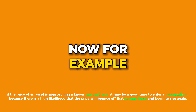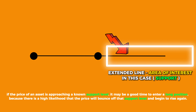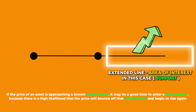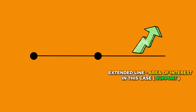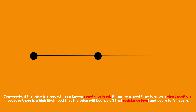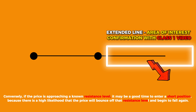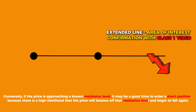For example, if the price of an asset is approaching a known support level, it may be a good time to enter a long position, because there is a high likelihood that the price will bounce off that support level and begin to rise again. Conversely, if the price is approaching a known resistance level, it may be a good time to enter a short position, because there is a high likelihood that the price will bounce off that resistance level and begin to fall again.